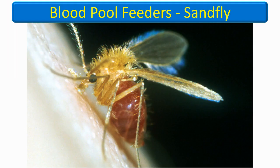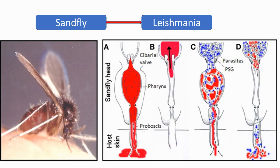This is a sand fly, and it is a pool feeder. It chews a hole in the skin of the host and feeds from the blood collected in that hole. Sand fly is responsible for the transmission of leishmaniasis, also called kala-azar. Leishmania parasites are present in the saliva of sand flies and are left behind in the blood pool, from where they enter the tissue and blood vessels of humans.